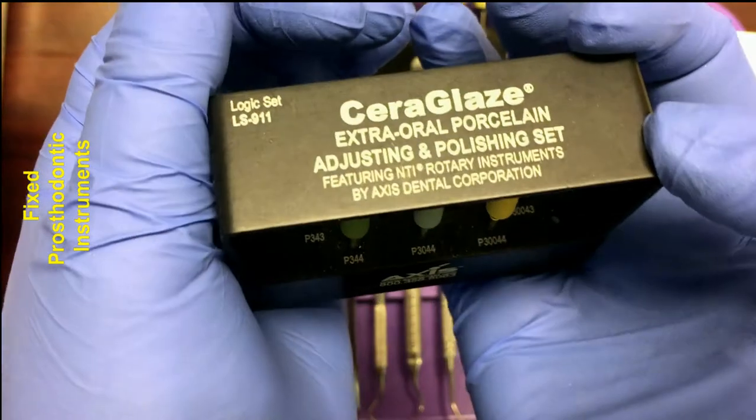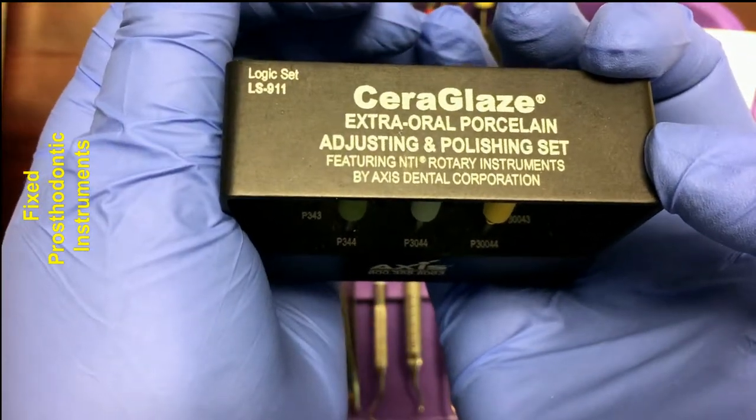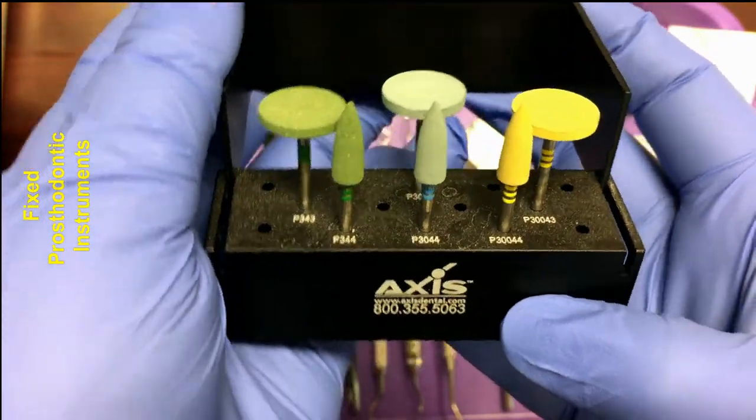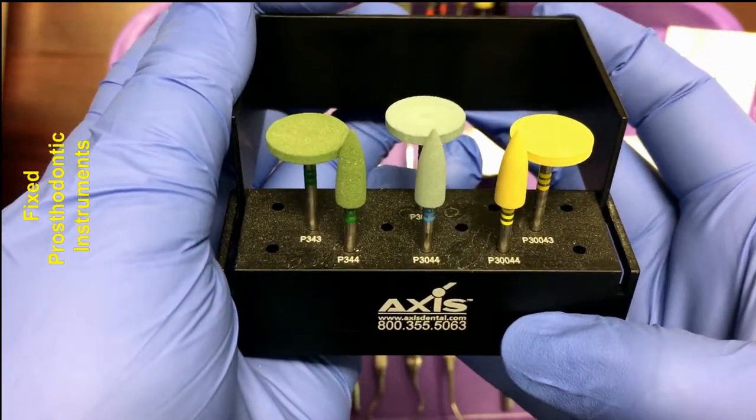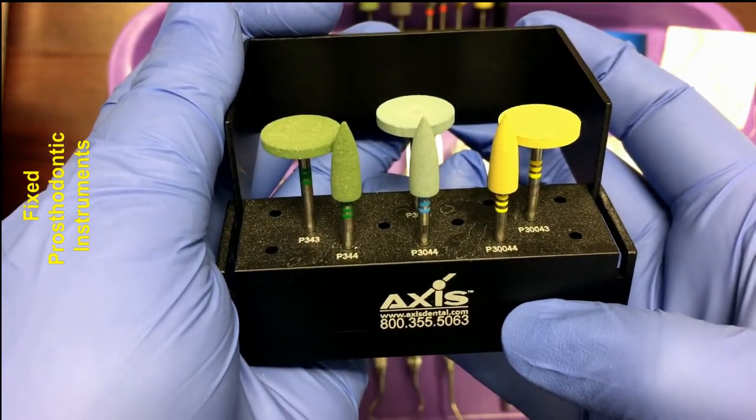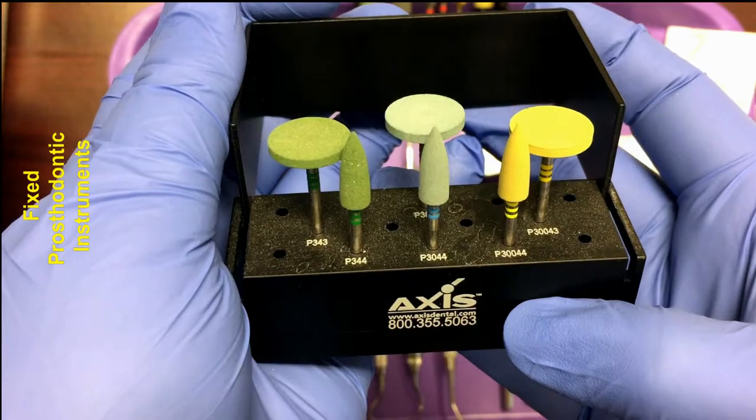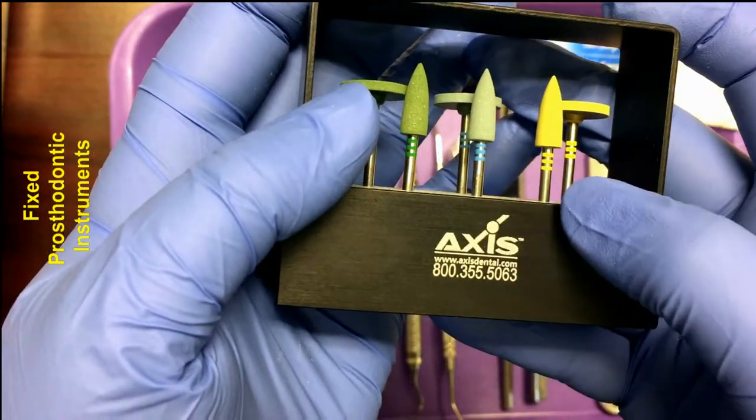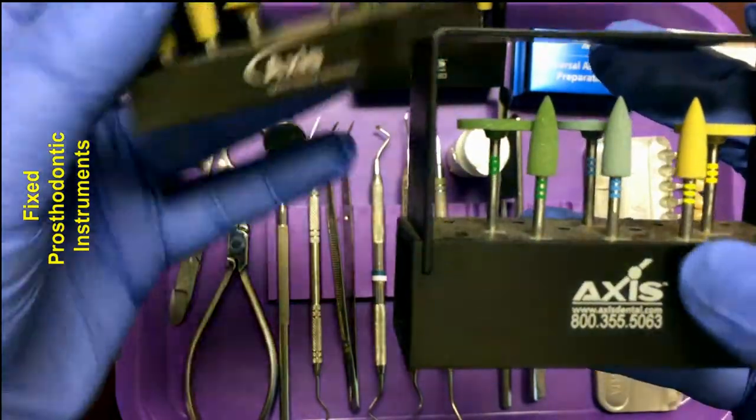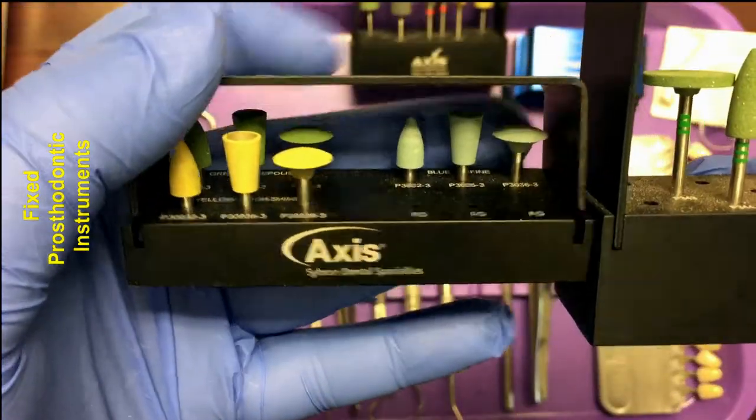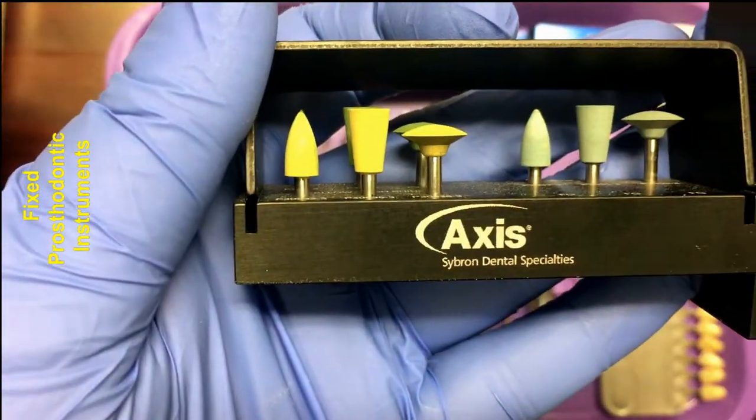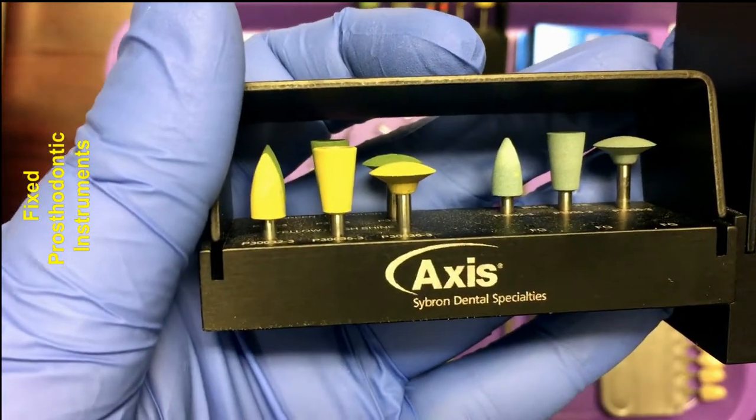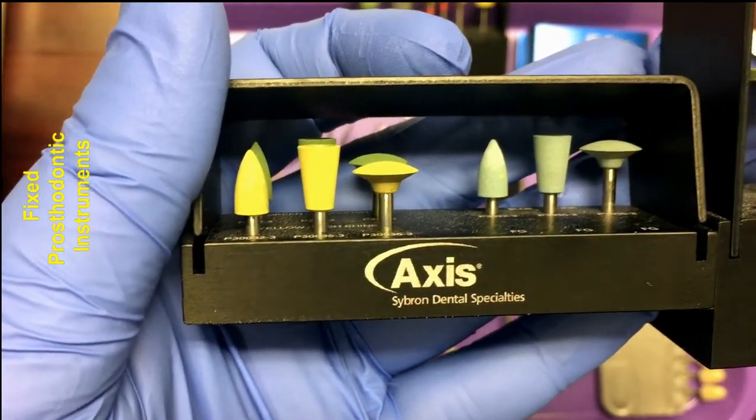These happen to be extra oral burrs. Notice the large size. Finishing burrs will also come in intraoral size so that once the restoration has been seated, the final adjustments can be made inside of the mouth. So before the restoration is cemented permanently, the doctor can adjust the crown or bridge outside of the mouth. Once it's cemented, any final adjustments are made with the intraoral finishing burrs.